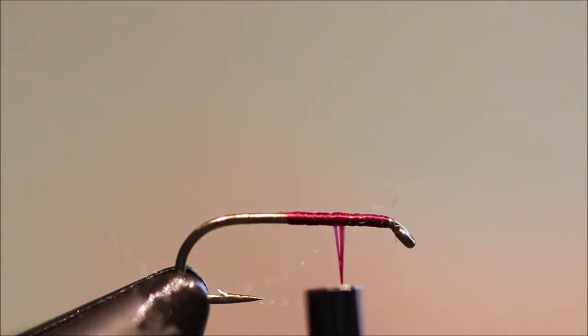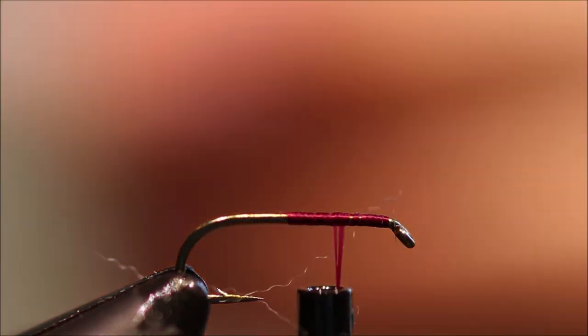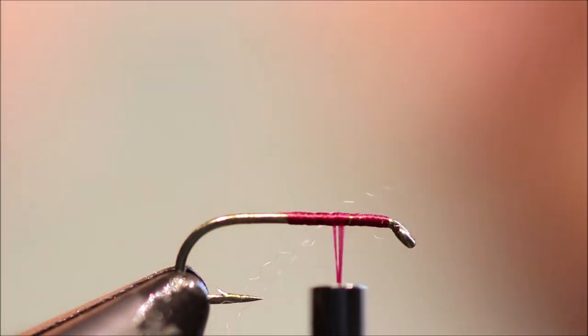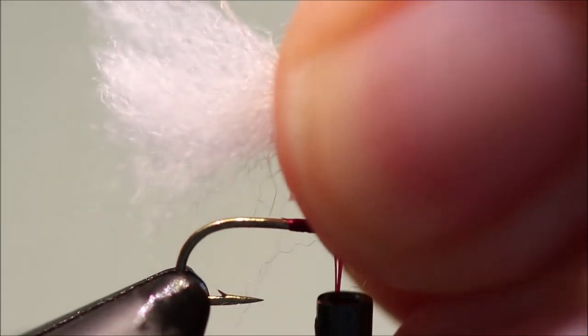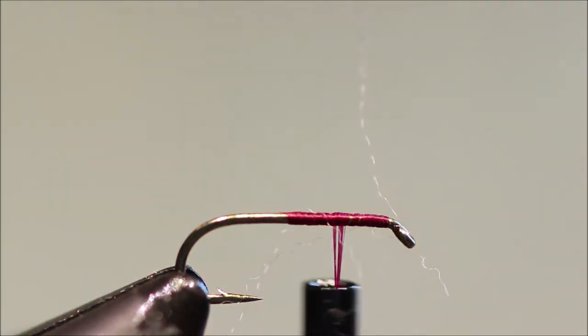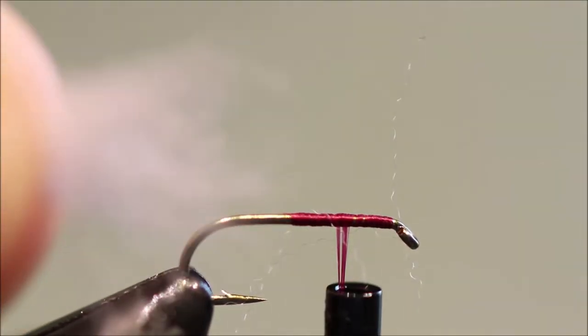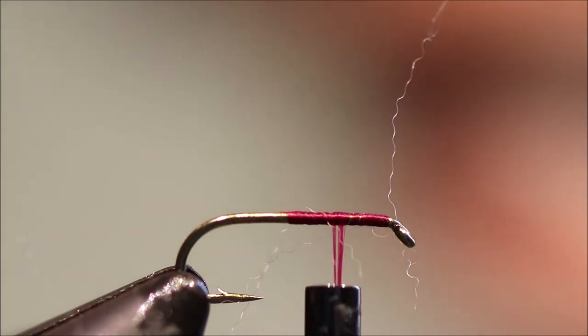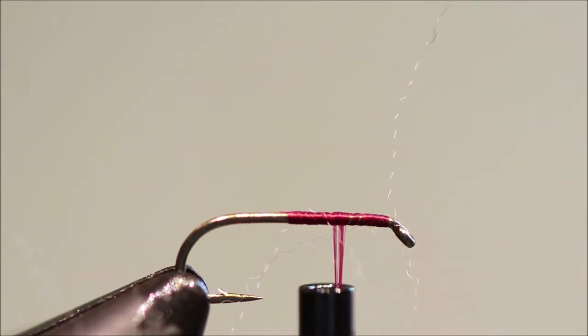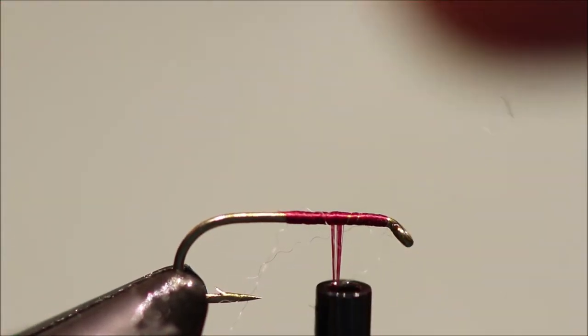I'm just going to take a clump, cut it free from the foot. I'm just going to hold the clump and pull out all this short underfur. That makes nice dubbing, so keep that for the body. And then, any guard hairs, just pull them away.